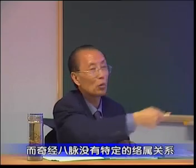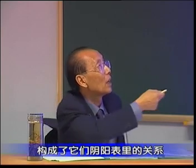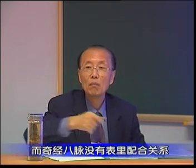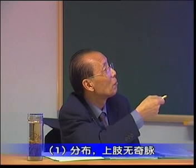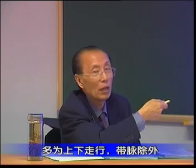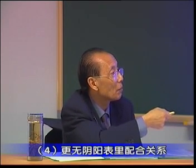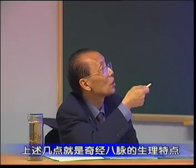第三，奇经八脉没有特定的络属关系，而12经脉直接属腑络脏或属脏络腑。第四，奇经八脉没有阴阳表里配合关系，而12经脉有明确的阴阳表里配合关系，分为手足三阴三阳，构成阴阳表里关系。以上四点就是奇经八脉的生理特点。